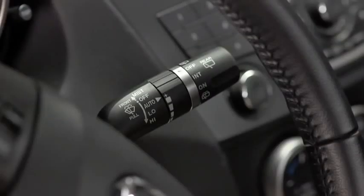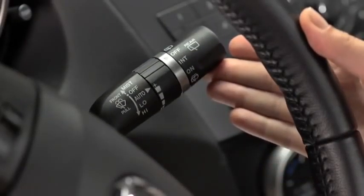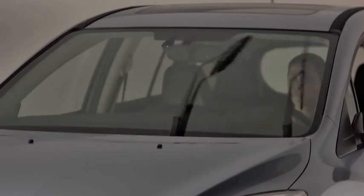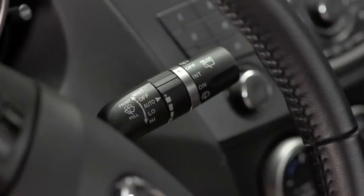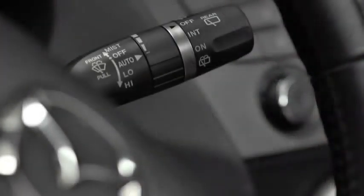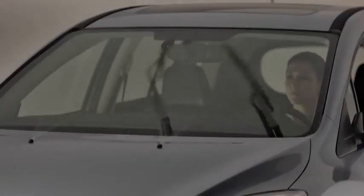For a single wipe, push the lever up to mist. For full-time low or high-speed wiping, pull the lever down to the low or high position. To spray washer fluid, pull the lever toward you.